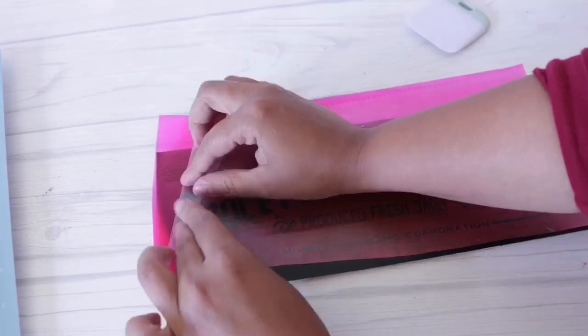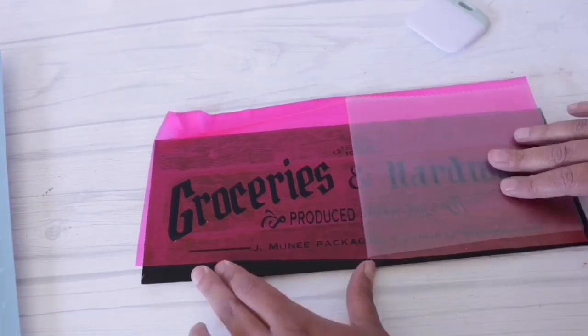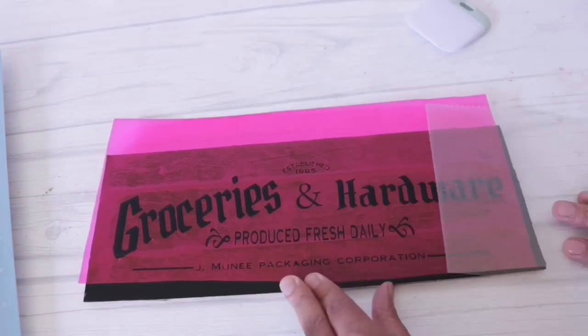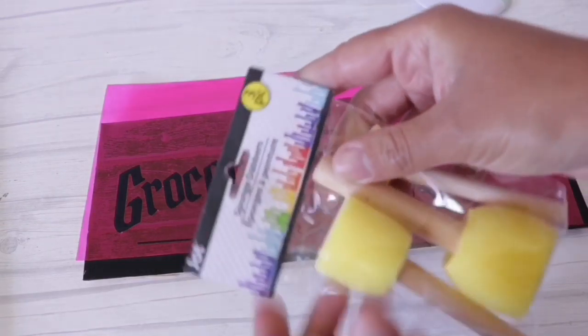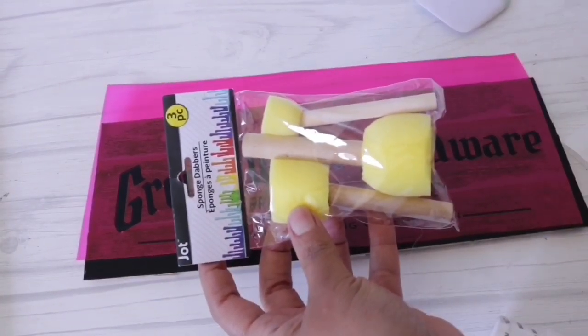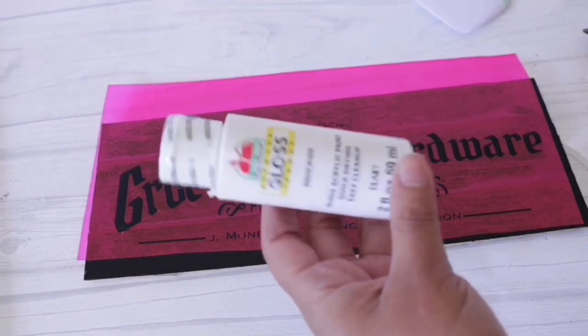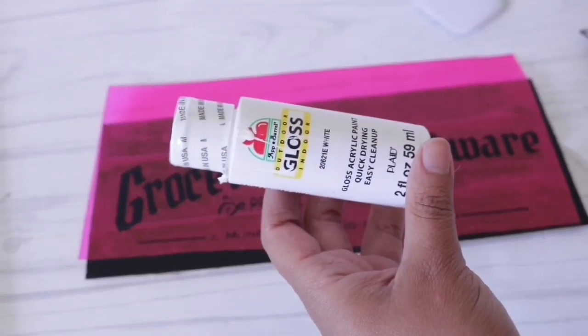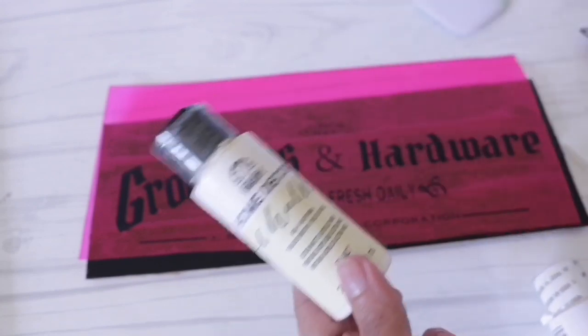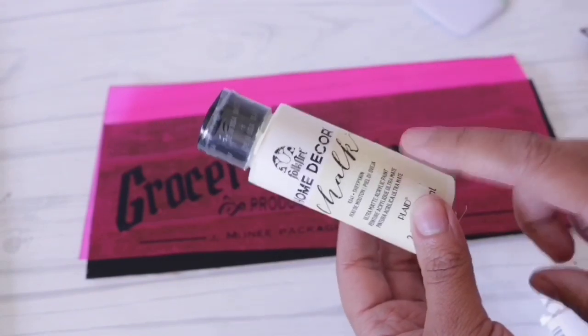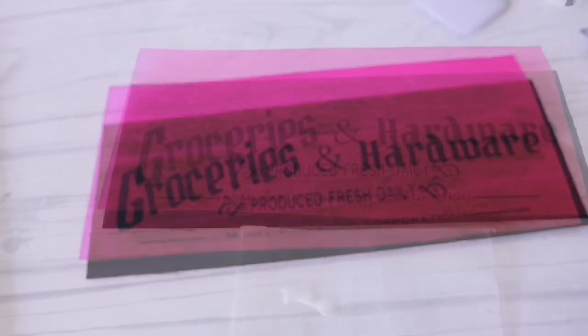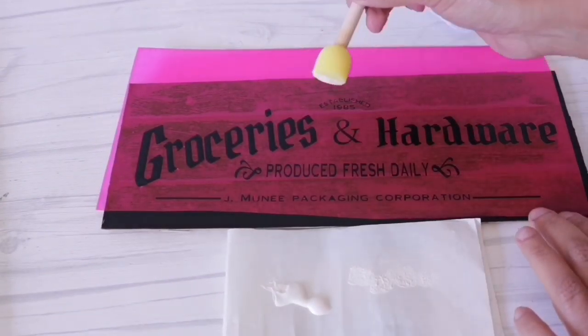To transfer it I'm going to use the Dollar Tree contact paper as transfer tape. I'm going to remove it and it does a beautiful job. If you are looking to save money, definitely consider using this instead of the Cricut brand stuff. I went ahead and applied it on my panel, secured it down, removed my Dollar Tree contact paper, and then with this little Dollar Tree brush I'm going to brush on some chalk paint.